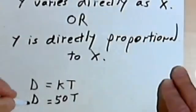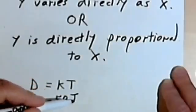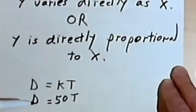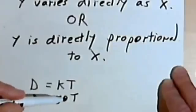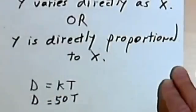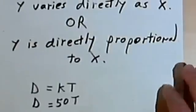And instead of a y, we're using a d here. Instead of an x, we're using a t here. And we could say that the distance varies directly as the time, or the distance is directly proportional to the time. Probably the best way to understand this is just to do a bunch of problems. So let's do some problems.